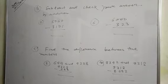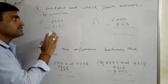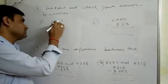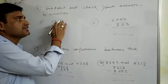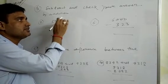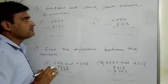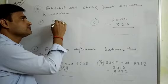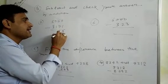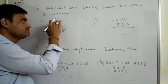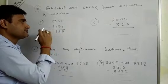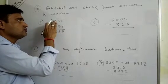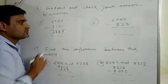Now we subtract and check your answer by addition. First we subtract: 0 is less than 1, so we take 1 carry from 6, making it 10. 10 minus 1 is 9. 15 minus 7 is 8. 9 minus 1 is 8. And 4 minus 3 is 1. The answer is 1889.